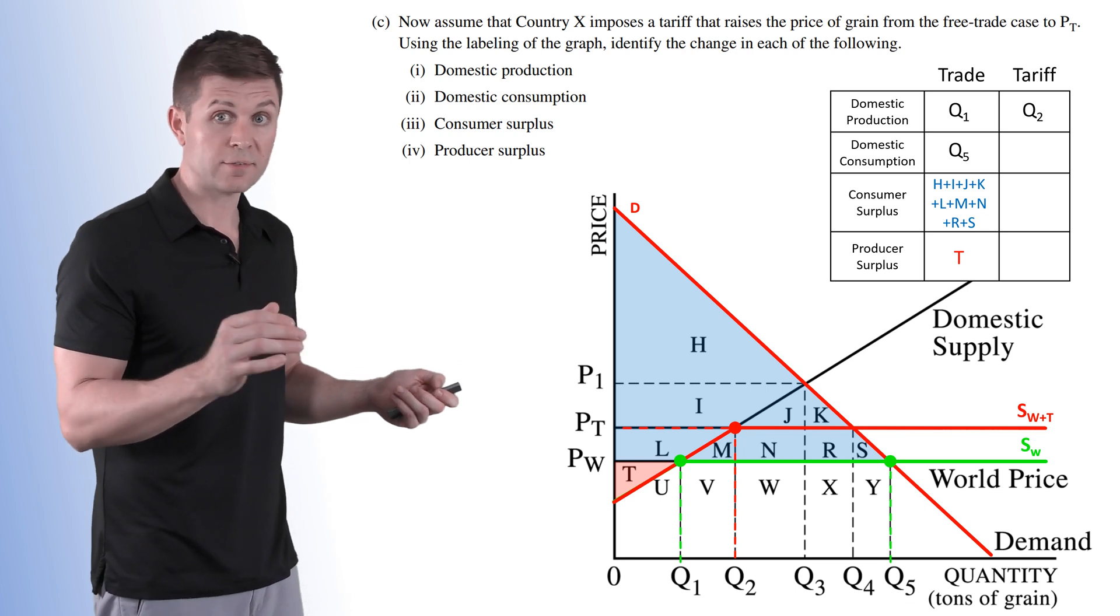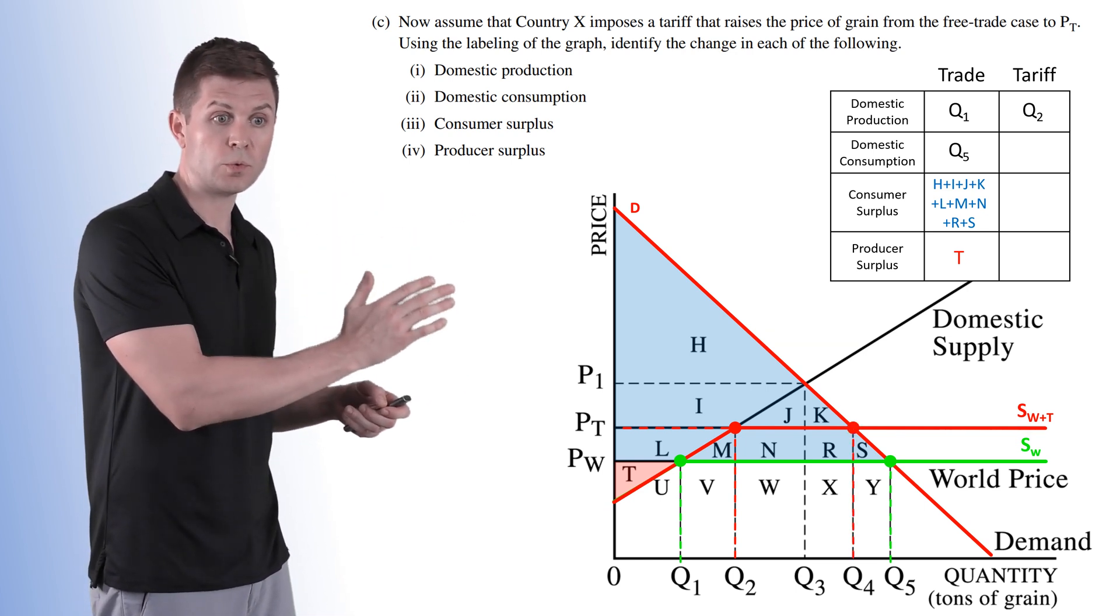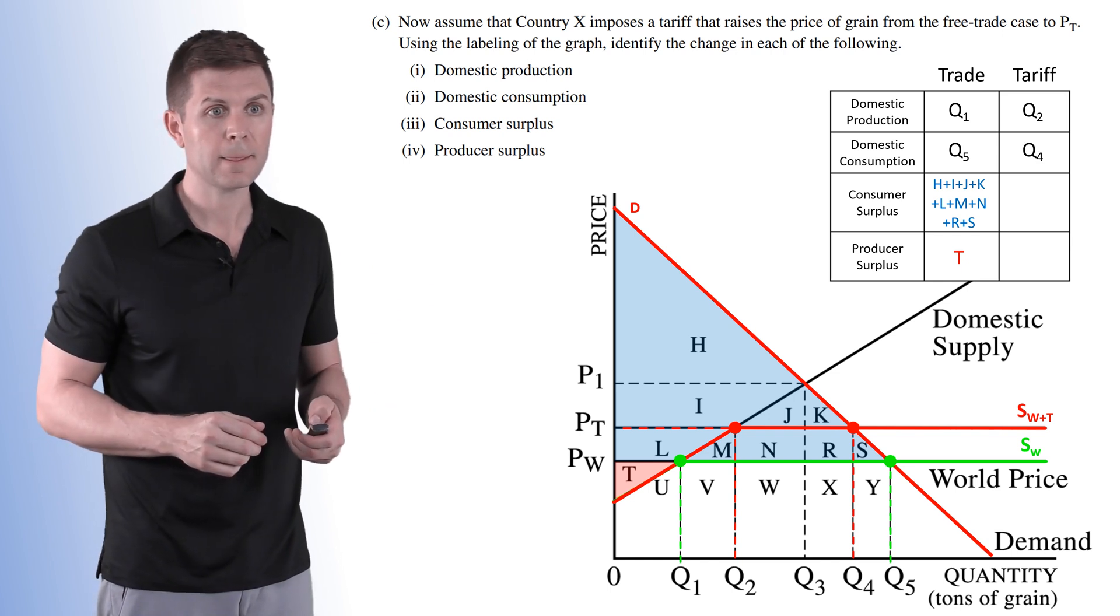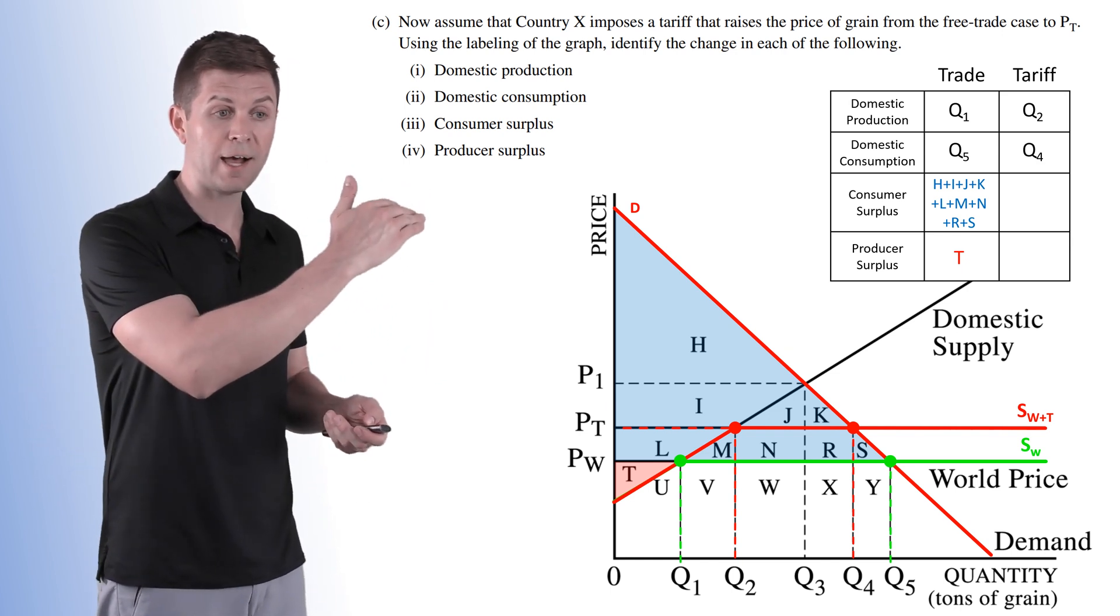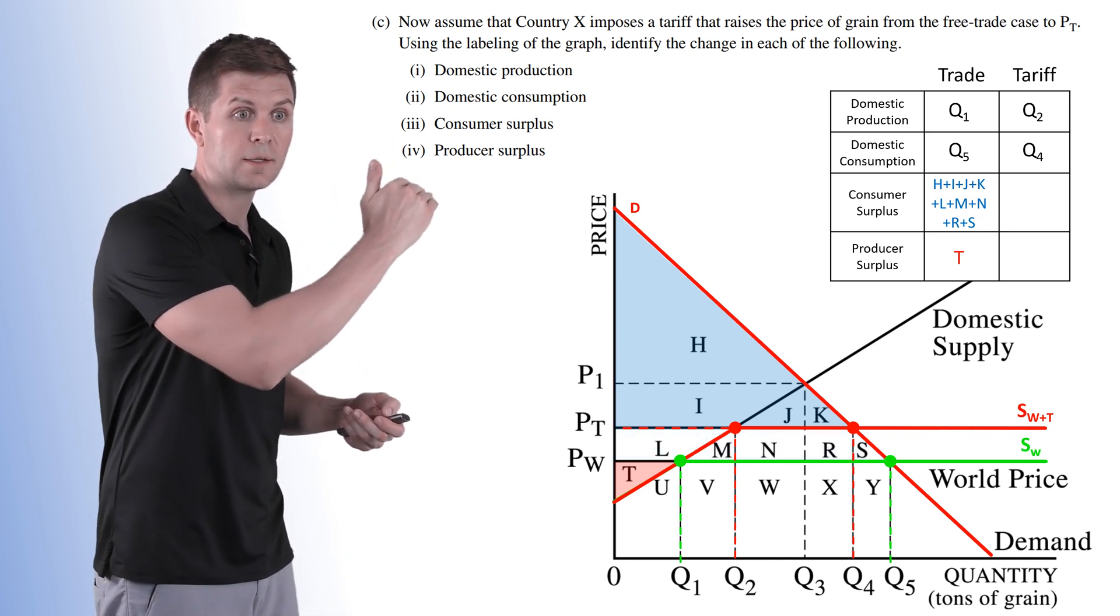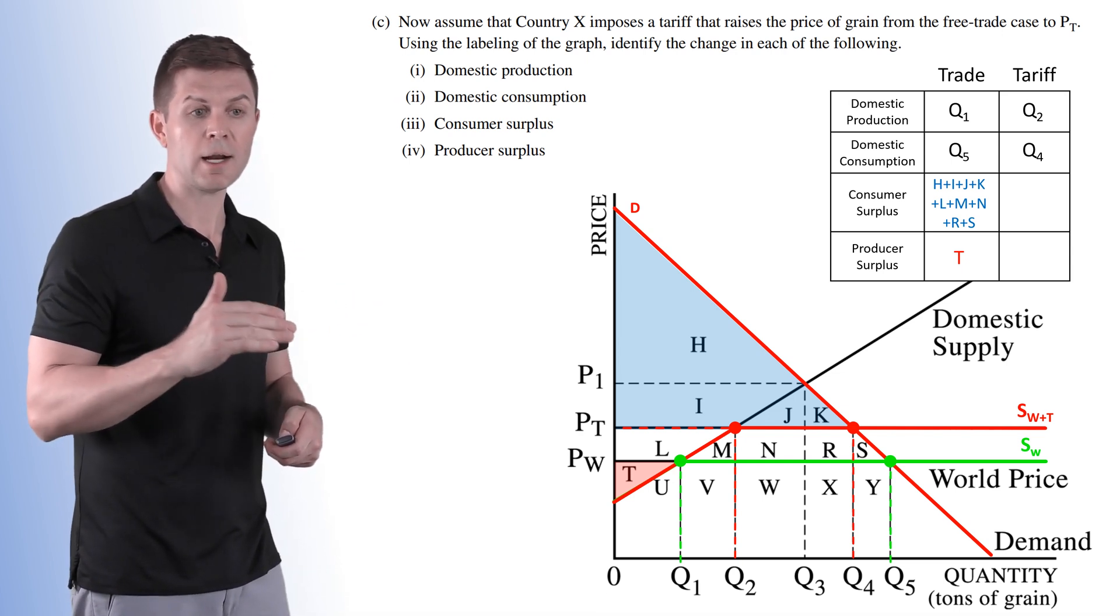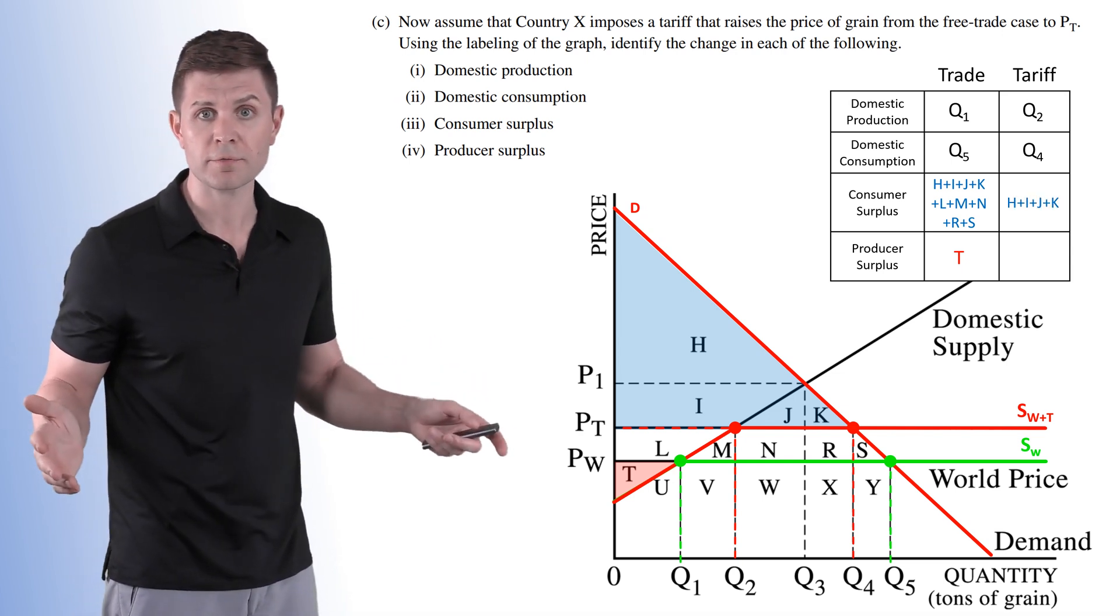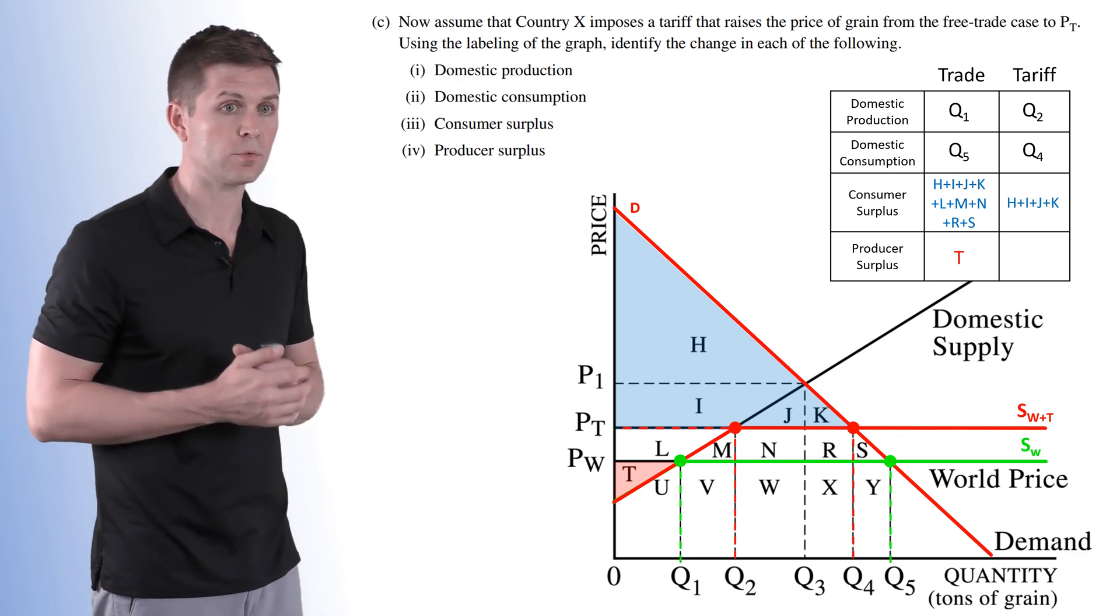So our new domestic production is now up to quantity 2 because of that higher price that the tariff provided. And our new domestic consumption, because we're at a higher price as well, is going to be a little bit lower at Q4. Now consumer surplus is going to change as well. Because price is higher, everything above the tariff price PT. HI, JK, we've lost L, M, N, R, and S. That's no longer part of consumer surplus. So HI, J, and K are the only parts of consumer surplus.